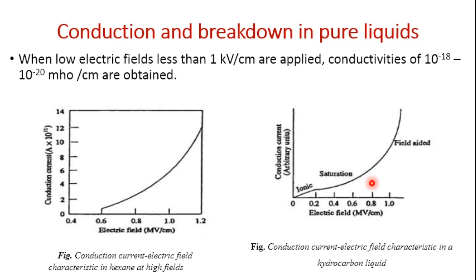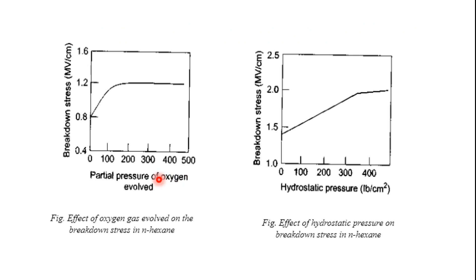The breakdown voltage mainly depends on the field, gap separation, work function of the material, and temperature of the cathode. In addition, liquid viscosity, temperature, density, and the molecular structure of the liquid also influence the breakdown strength. It has been observed that the increase in breakdown strength is greater if the dissolved gases are electronegative in nature — from the partial pressure of evolved oxygen. Similarly, increasing the hydrostatic pressure of the liquid increases the breakdown strength.